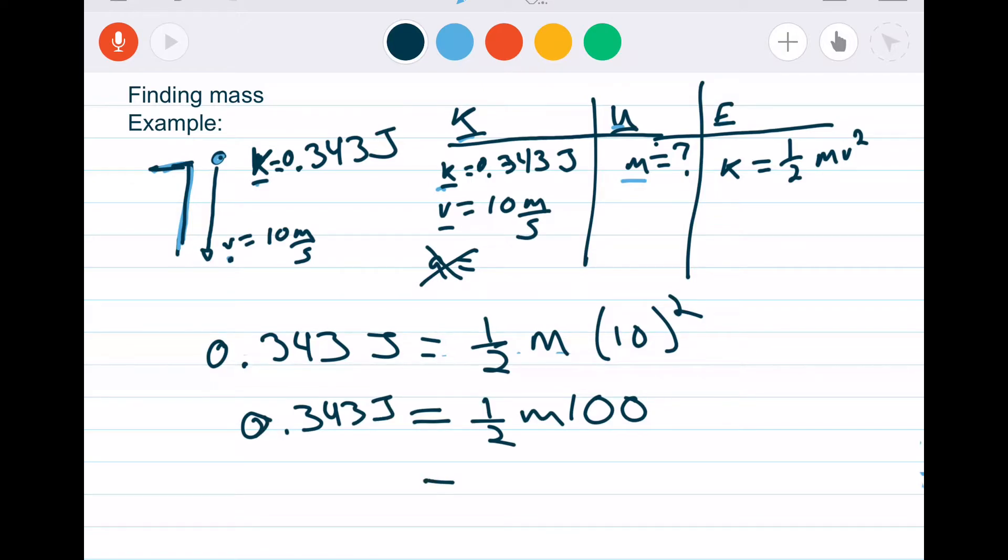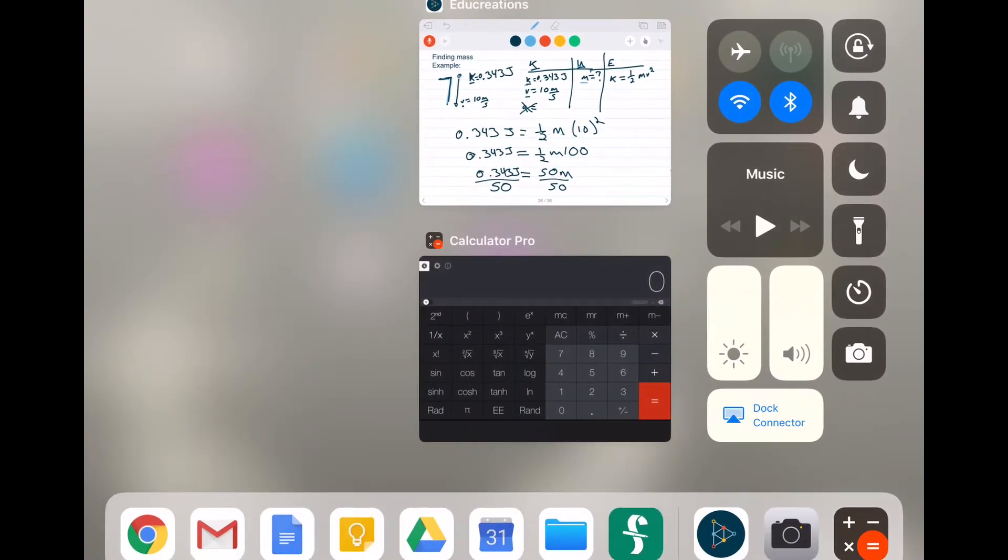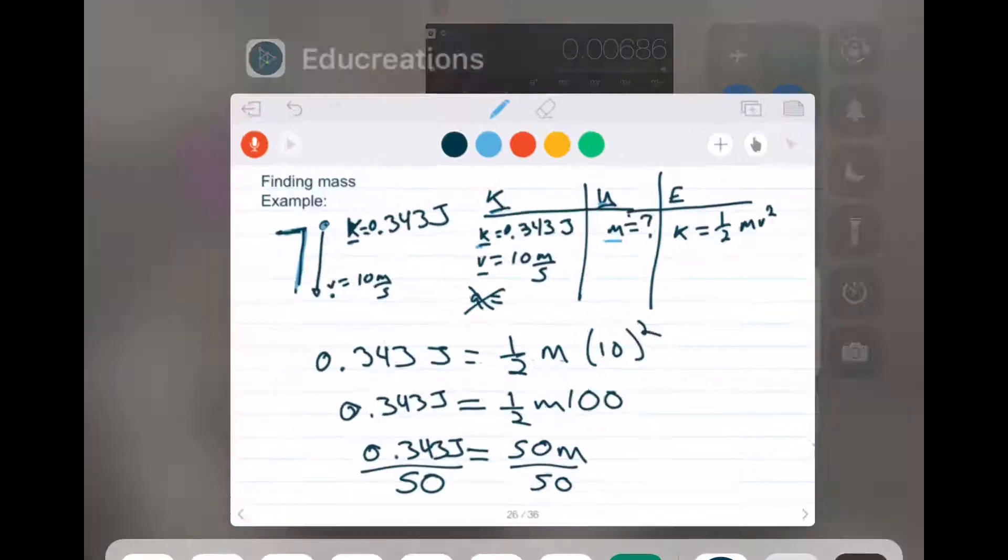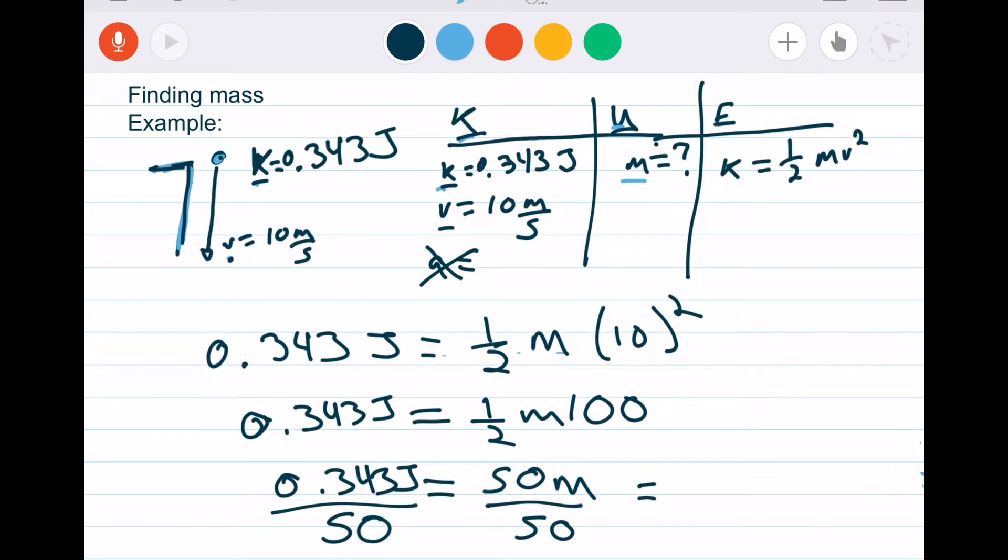Half of 100 is 50, so 50m equals 0.343 joules. Divide both sides by 50 and you will get a mass. Let's check it in the calculator. So 0.343 joules divided by 50 equals 0.00686. So our mass equals 0.00686 kilograms, which is about 6 grams. It's a pretty small egg.